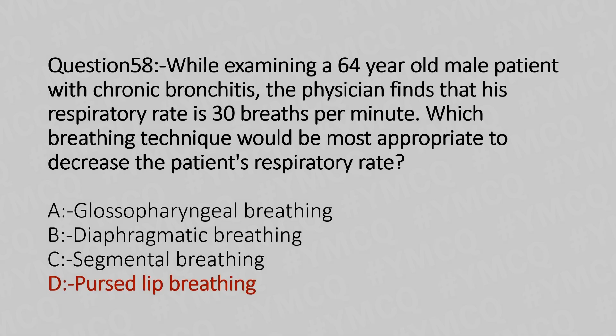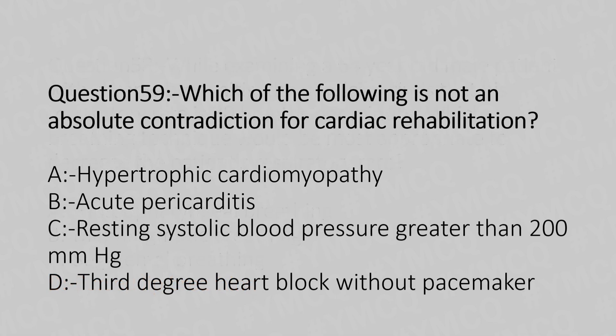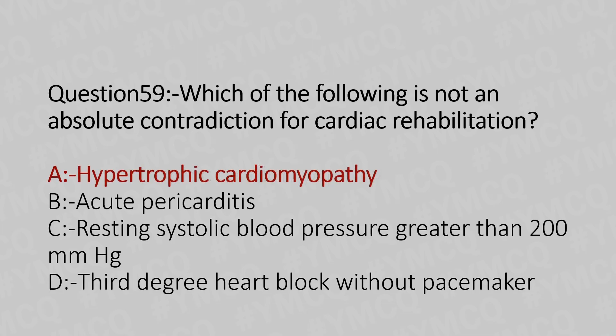Now let's move to question number 59. Which of the following is not an absolute contraindication for cardiac rehabilitation? Option A, hypertrophic cardiomyopathy. Option B, acute pericarditis. Option C, resting systolic blood pressure greater than 200 mmHg. Option D, third degree heart block without pacemaker. And the answer is Option A, hypertrophic cardiomyopathy.